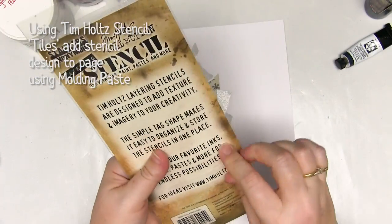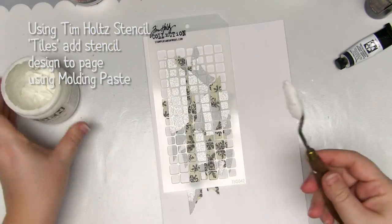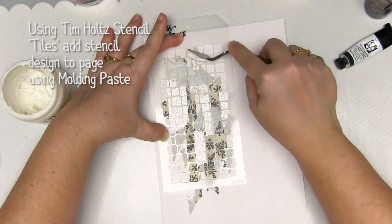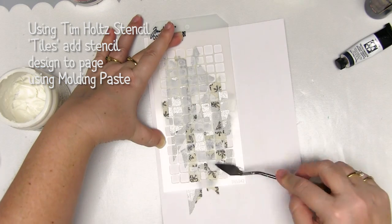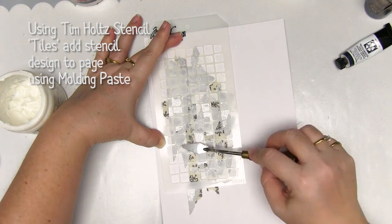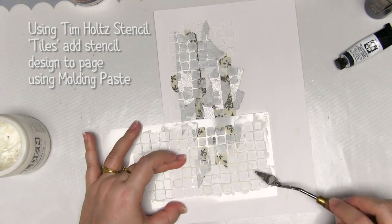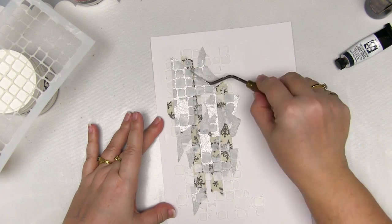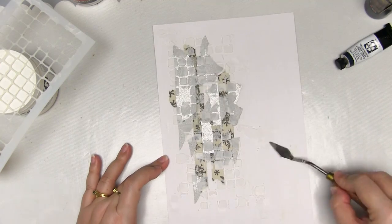I have a gorgeous Tim Holtz stencil, this one is the tiles design, and I'm going to randomly add this molding paste over my background. I am trying really hard not to cover up all of my shimmer spots, and I have to make absolutely certain I've got this applied everywhere I wanted before I move the stencil. While it's wet, you've got the opportunity to scrape off any areas that you don't like.